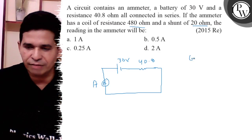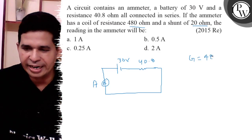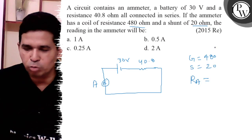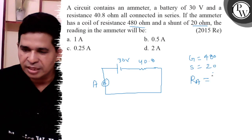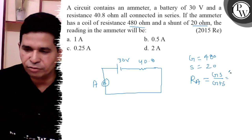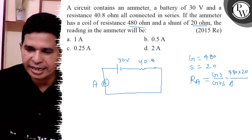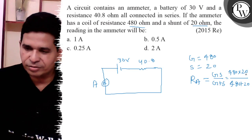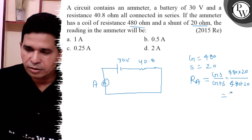The value of G (galvanometer resistance) is 480 ohms and the value of shunt S is 20 ohms. The resistance of the ammeter is calculated because both are connected in parallel: (G × S) / (G + S) = (480 × 20) / (480 + 20) = 9600 / 500, which gives 96/5.